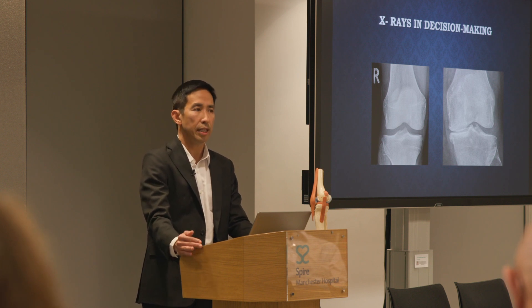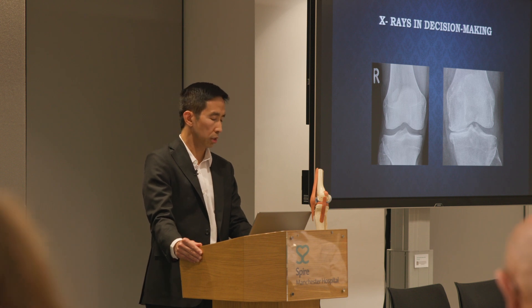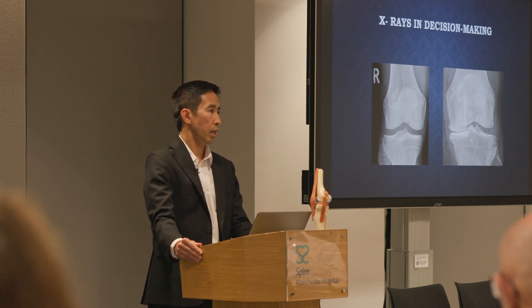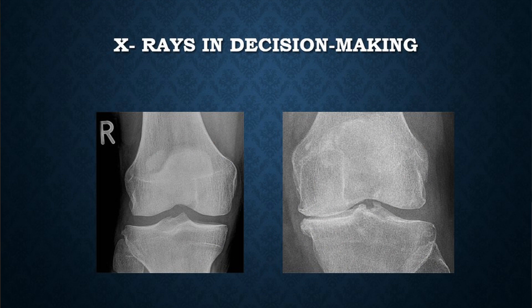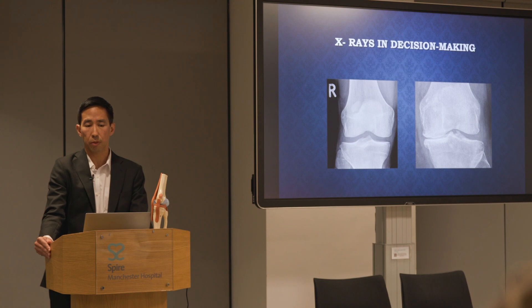Bone-on-bone arthritis is the most severe form, where there is complete loss of cartilage capping the thigh and shin bone. This imaging helps with decision making: somebody with a more normal-appearing X-ray is more likely to benefit from a period of non-operative conservative treatment, whereas somebody with severe bone-on-bone osteoarthritis may require joint replacement, depending on their requirements and expectations.